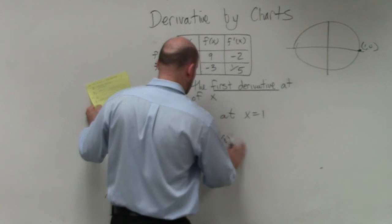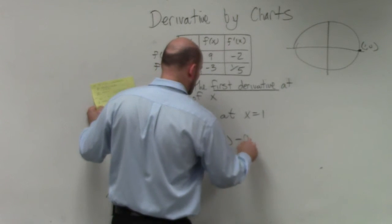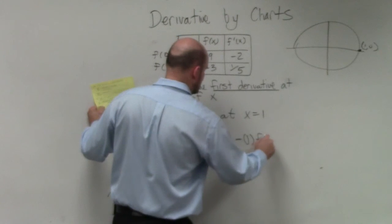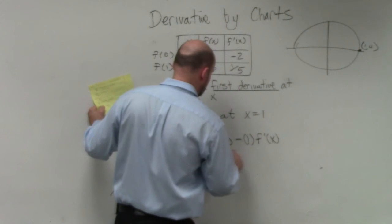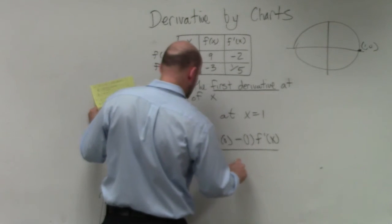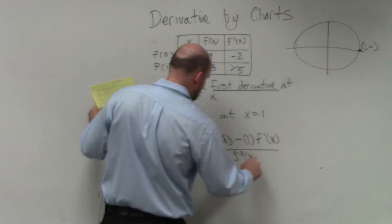equals minus 1 times f prime of x, divided by f squared of x.